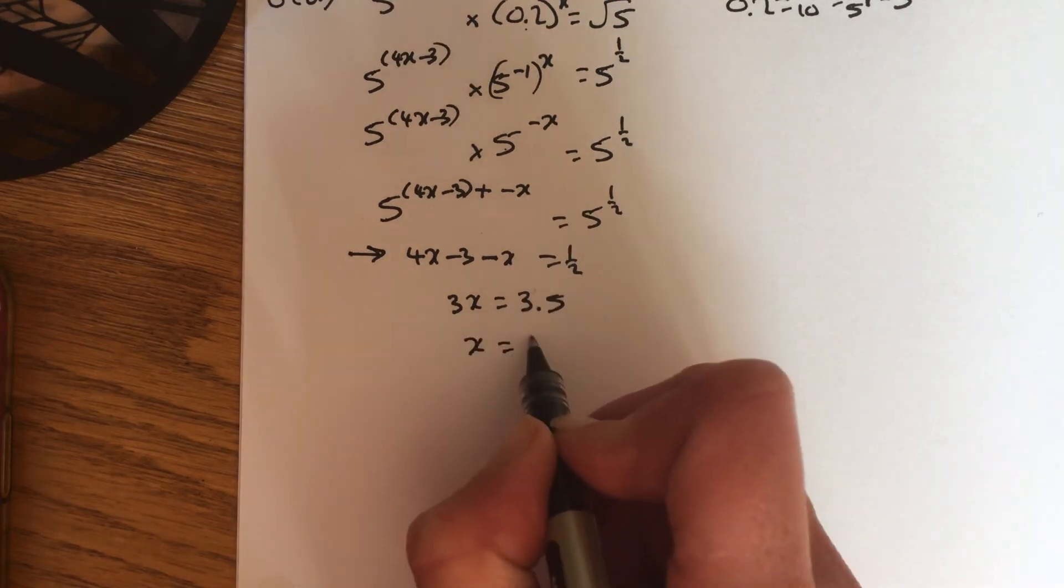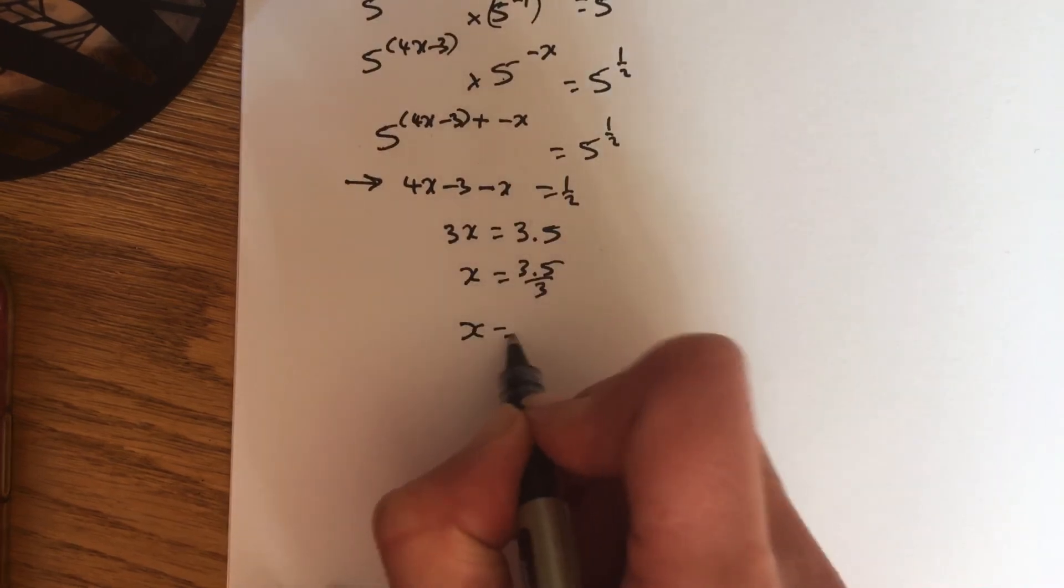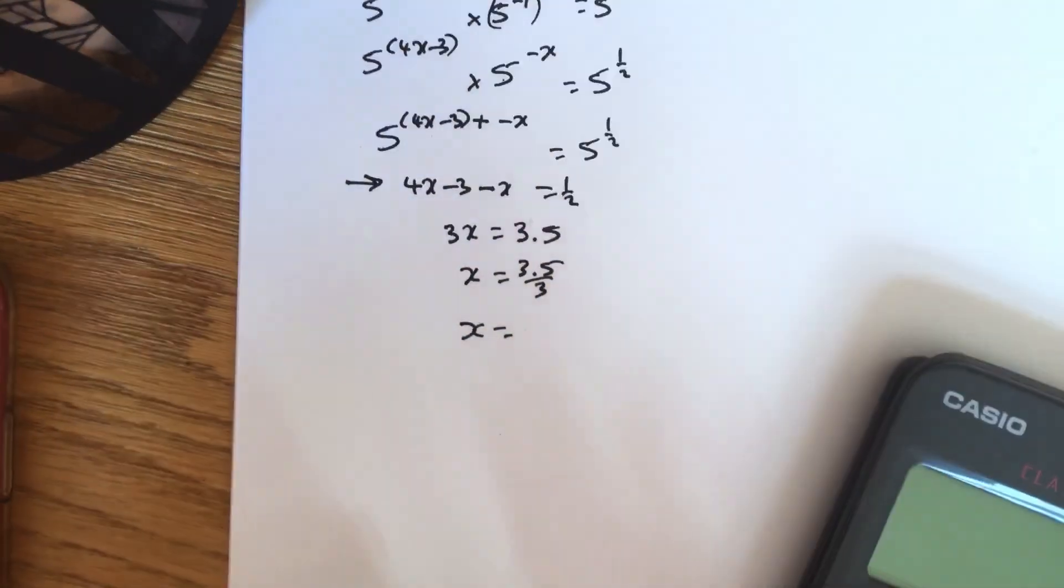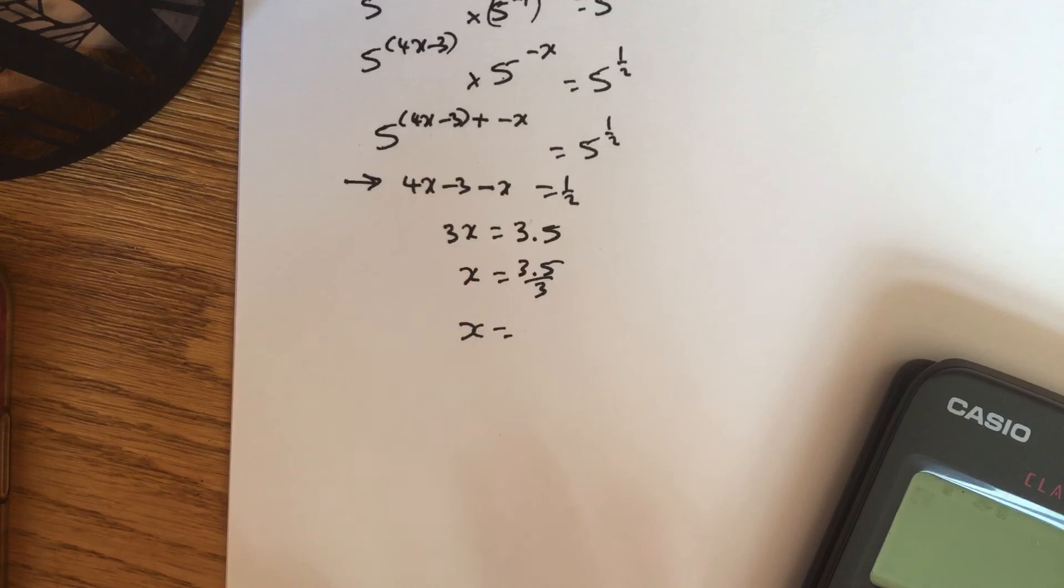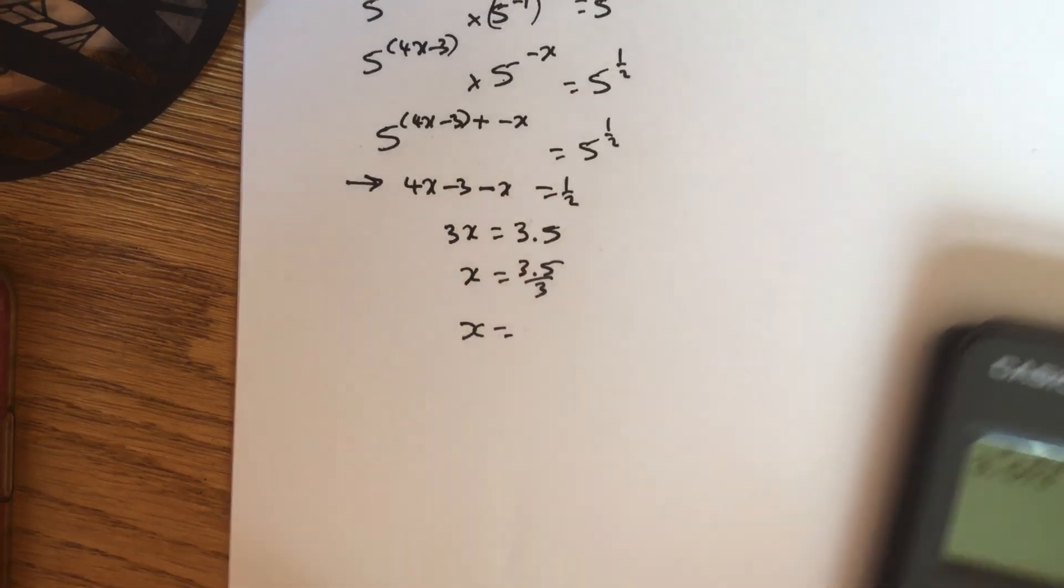And now you've got x equals 3.5 divided by 3, which gives you an answer of 7 over 6.